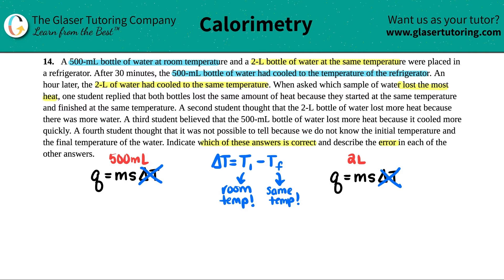Now let's look at S. For both of them it's water, and the specific heat of water is a constant number — it's 4.184. We don't really need to know that for this, but since it's the same number, this has nothing to do with the difference in heat loss or heat gained either.